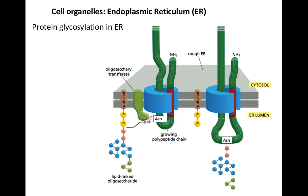Today we are going to talk about post-translational modifications in the endoplasmic reticulum. One of the most common modifications is protein glycosylation. Protein glycosylation can take place in both conditions: during co-translational translocation of proteins, and also in post-translational modifications once the proteins have been synthesized. Both co-translational and post-translational modifications can take place in the ER.